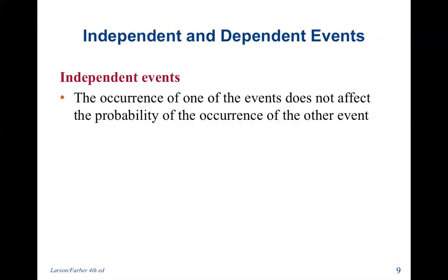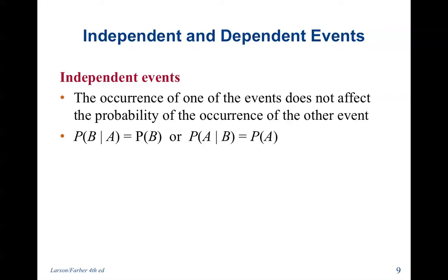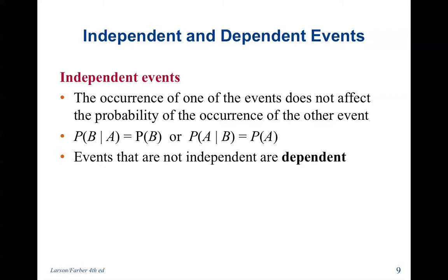For an independent event, the occurrence of one event does not affect the probability of the other event. So the probability of B given A equals the probability of B, or the probability of A given B equals the probability of A. Events that are not independent are dependent.